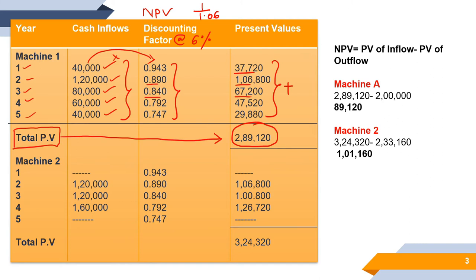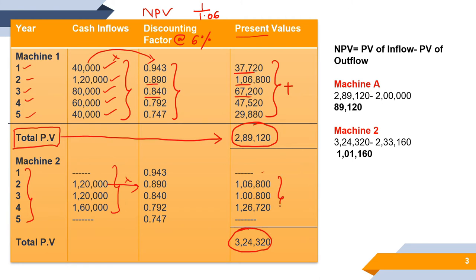For Machine 1, all cash inflows from the question were multiplied by the discounting factors and the present values were summed to get total present values. Now we do the same for Machine 2. Machine 2 also has 5 years of data which is entered. The same discounting factors are copied from above. The first year entry is dash, so it is 0. The remaining years are multiplied, all results are added, and we get total present values of 3,24,320 for Machine 2.